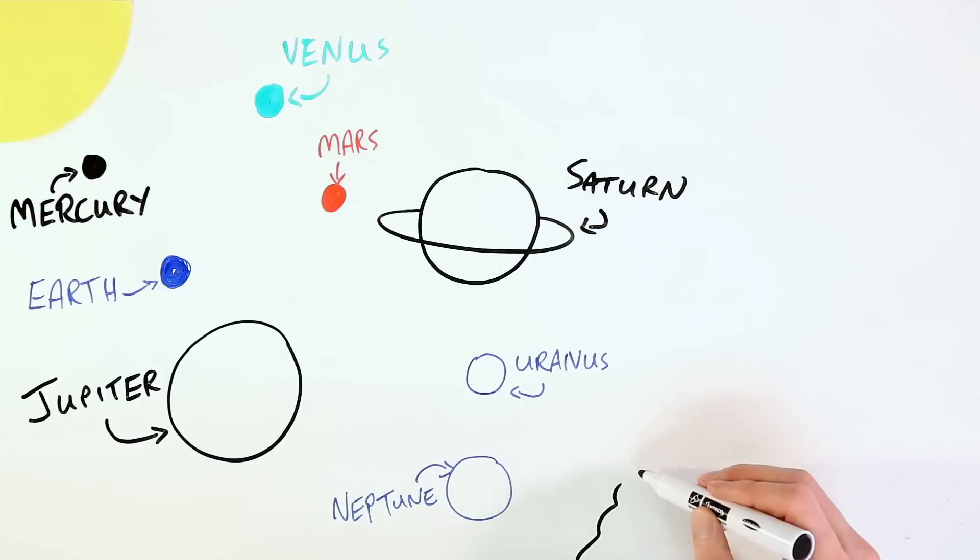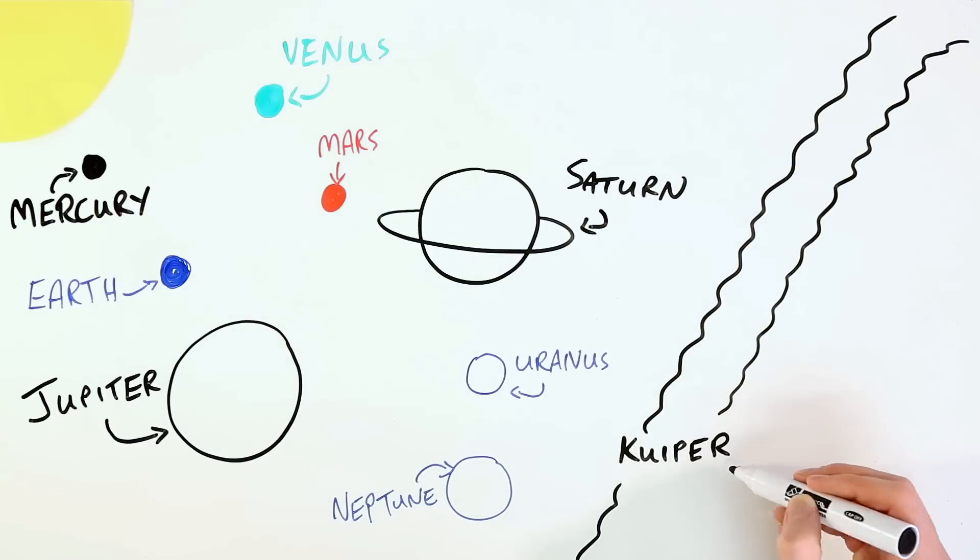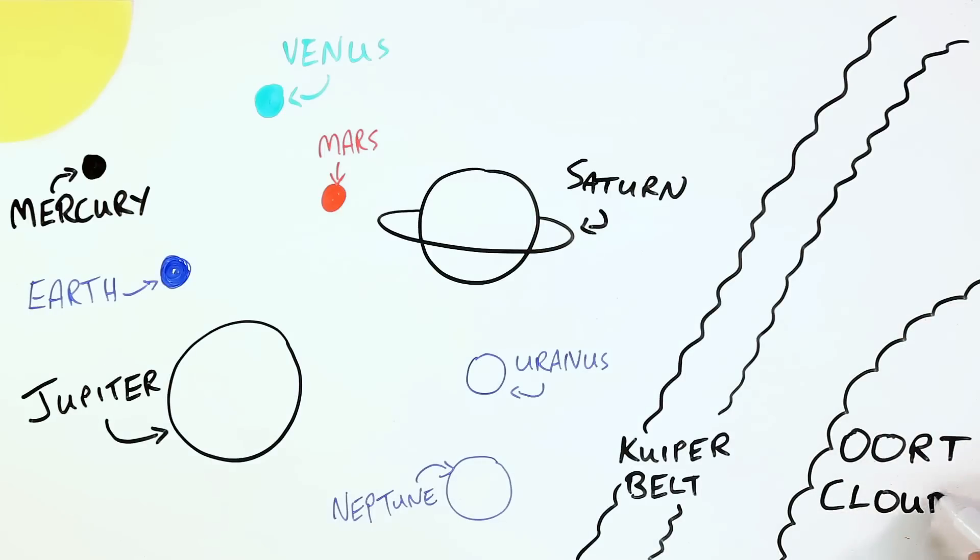5 billion kilometers from the Sun is the Kuiper Belt, a collection of ice and rock left over from the formation of the solar system. And far beyond the Kuiper Belt, 7.5 trillion kilometers from the Sun, lies the Oort Cloud, which is an even greater collection of ice and dust.